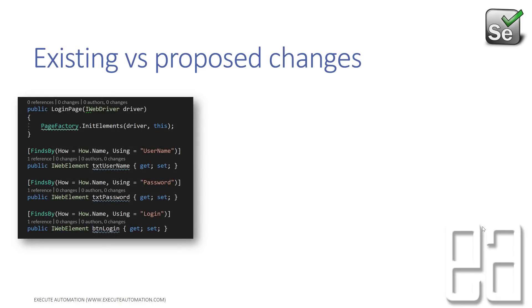The existing code we were writing in the page object model looked something like this: we had a LoginPage with PageFactory.InitElements. The PageFactory class is going to be deprecated, and with it, all the attributes like FindBy with How.Name, XPath, or CSS will also be deprecated, because these objects' attributes cannot be initialized without the InitElements method.